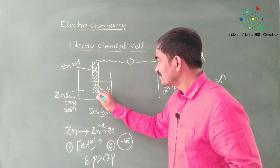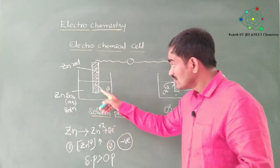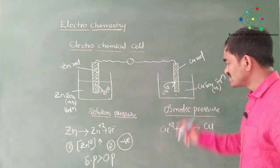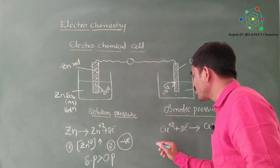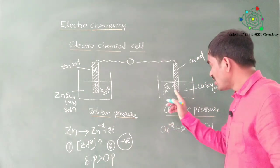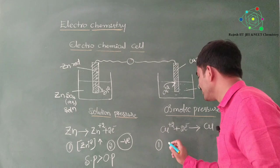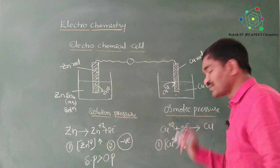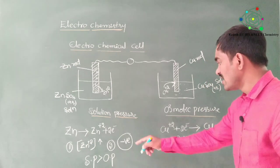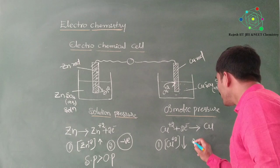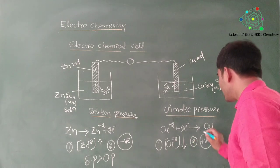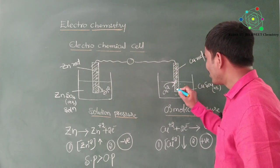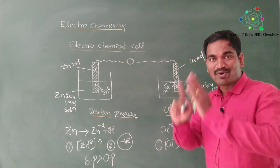In the zinc half cell, solution pressure is dominating because zinc ions are coming out of the metal rod. Due to osmotic pressure in the copper half cell, two changes take place: point one — metal ion concentration decreases; point two — positive charge on the rod increases. So, rod charge is positive here, whereas rod charge is negative in the solution pressure case.